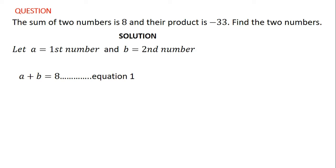The second part says their product is negative 33. Product means multiplication, so if you multiply those two numbers you get negative 33. Therefore a times b is equal to negative 33, and that will be equation two.